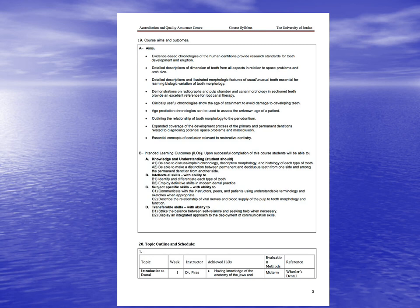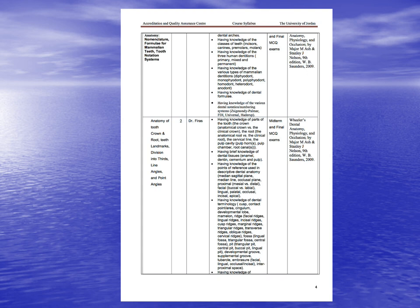In this course you will be given 14 lectures. This is the first one, which will introduce you to the nomenclature of teeth — the different terms, names and systems we use to describe and name teeth. Next week we will be talking about anatomy of the tooth and crown and the landmarks we use to communicate with each other and with other dentists.